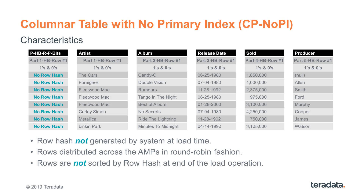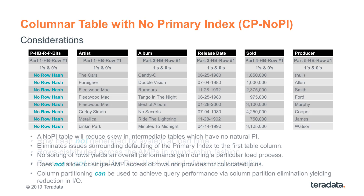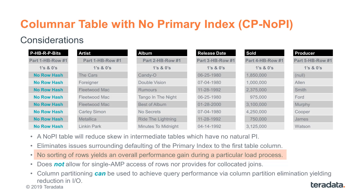Since the initial implementation, the columnar tables were predicated on a no-PI table, so there is no row hash used at any time. Rows are distributed across the AMPs in round-robin fashion in the same manner as it is for the row-based table with no primary index. Since there is no row hash in the no-PI tables there is no sorting for row hash as data is stored on the AMP. A columnar no-PI table eliminates skew the same way as a row-based no-PI table does. Data is distributed in round-robin fashion across all AMPs so a non-optimal PI or the unintended default of the first column being the PI do not manifest in potentially massive data skew. There is no sorting of the rows at the end of the loading operation so you can get an overall performance gain when loading the no-PI tables. On the other hand it does not allow for single AMP access of rows nor provide co-located joins, for the same reason as it does for row-based no-PI tables.